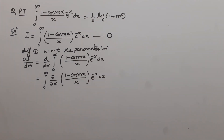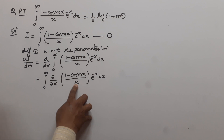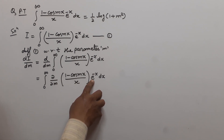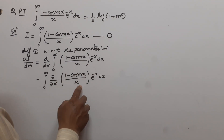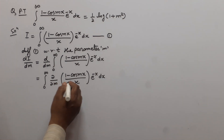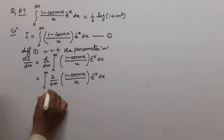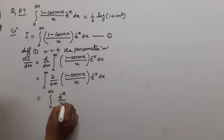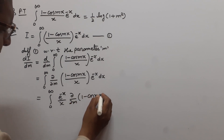So this can be written as the integral from 0 to infinity of ∂/∂m of (1 - cos(mx)) / x multiplied by e to the power minus x dx. Here, x in the denominator and e^(-x) are both constant with respect to m, so they go outside the differential operator.